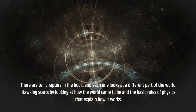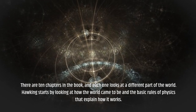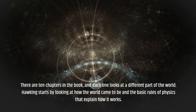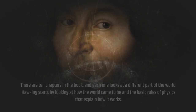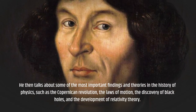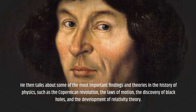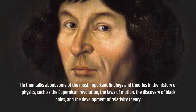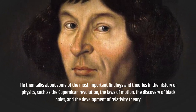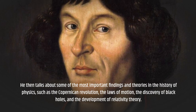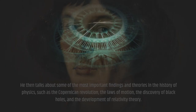Hawking starts by looking at how the world came to be and the basic rules of physics that explain how it works. He then talks about some of the most important findings and theories in the history of physics, such as the Copernican Revolution, the laws of motion, the discovery of black holes, and the development of relativity theory.